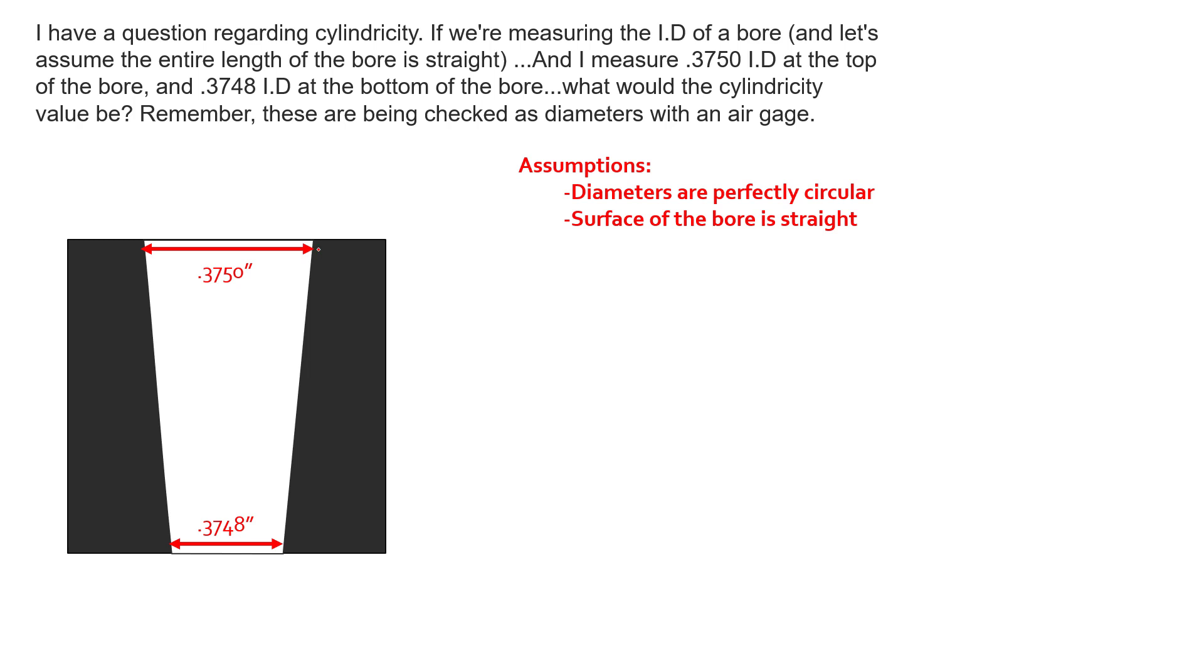So that can mean a couple different things. The bore could be straight along the linear elements of the bore, right? So we have perfectly straight linear elements. Or we could also have a perfectly straight derived median axis of this bore. In other words, it's perfectly straight.